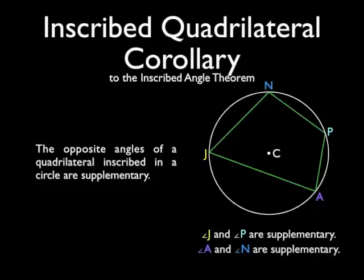Now, I'm only going to show you how to do this with two angles, but you can do it with the other two as well, and it's really simple. Angle A is going to be half the measure of arc JNP, and angle N is going to be half the measure of arc JAP.